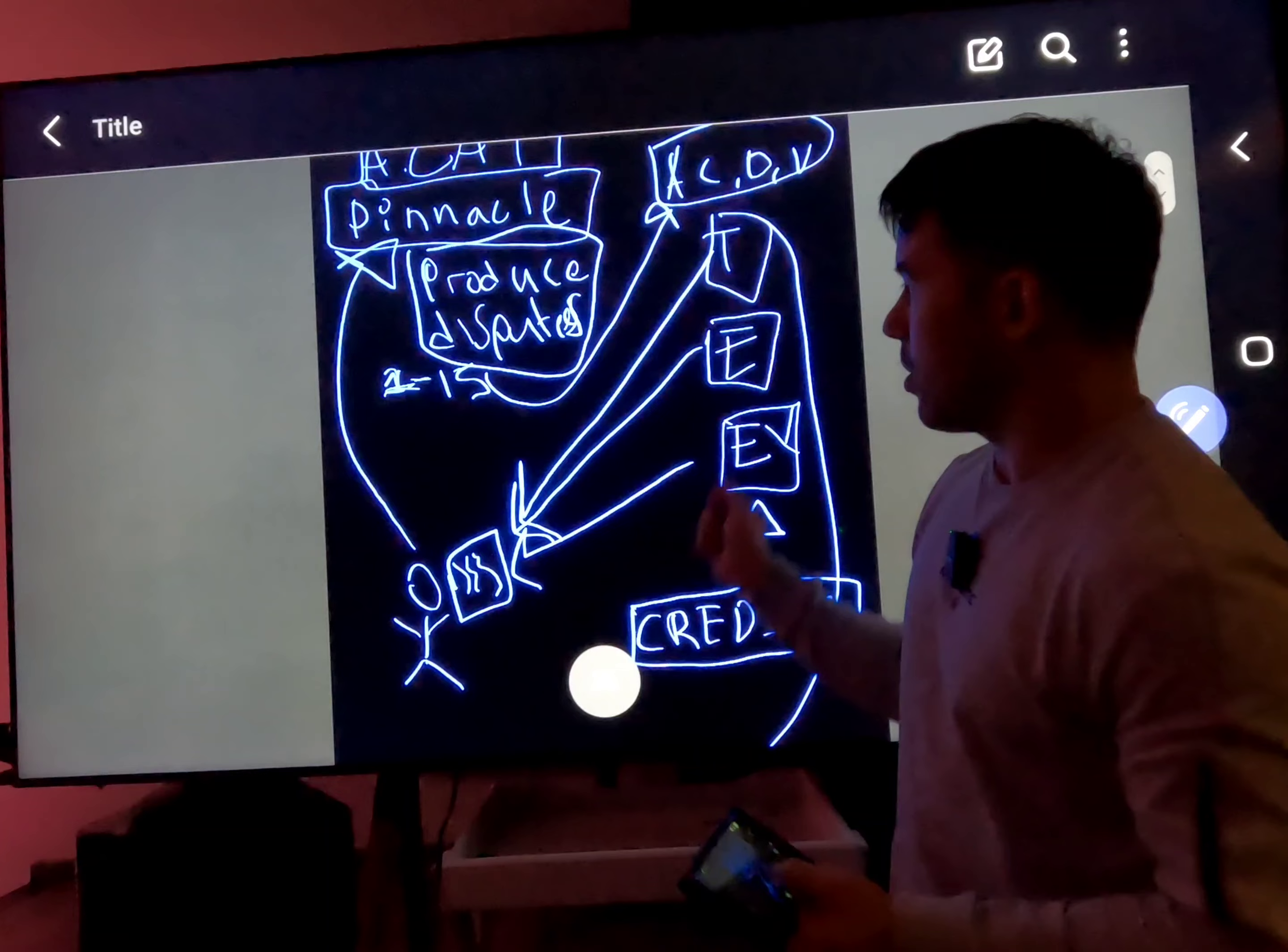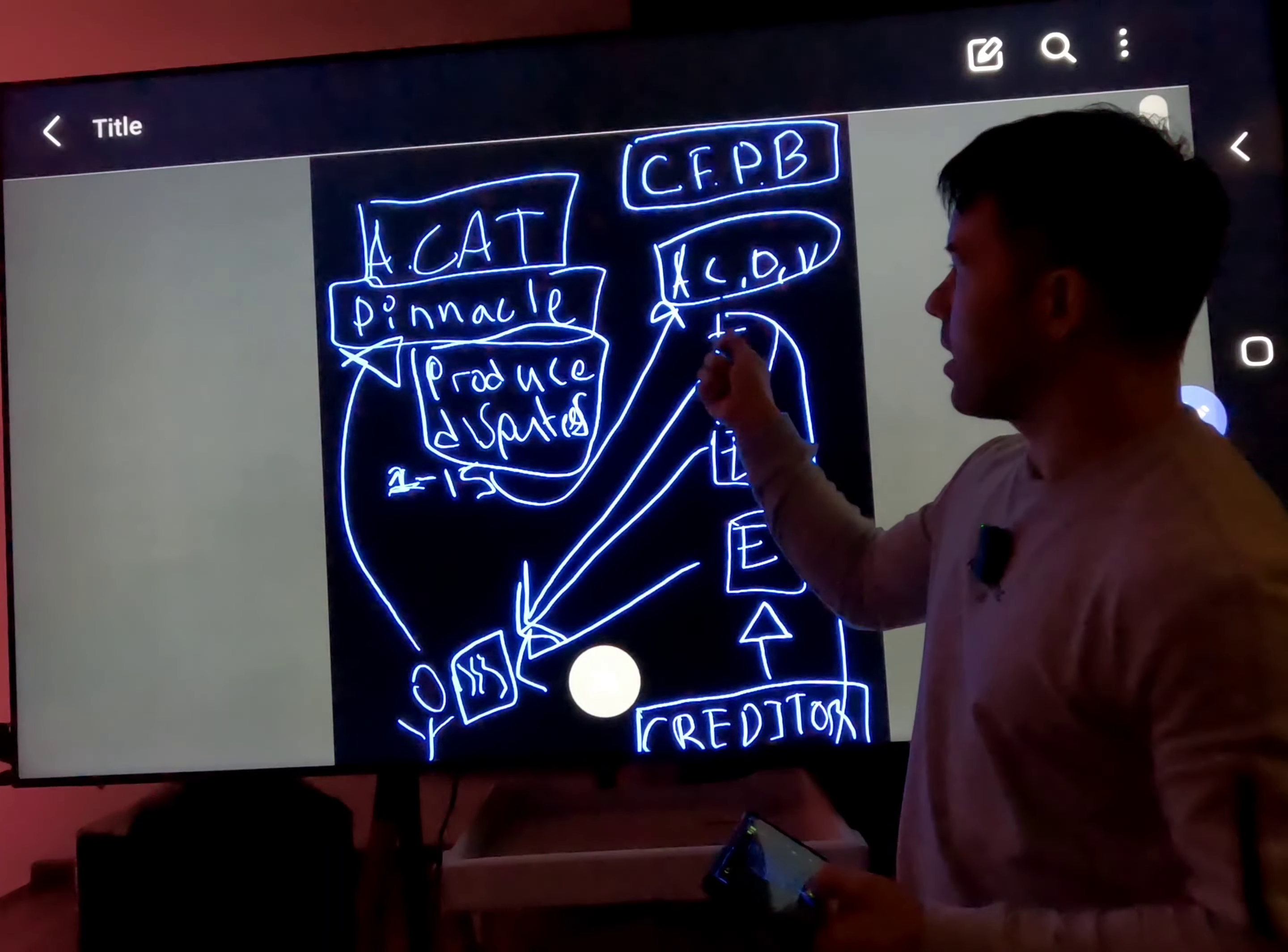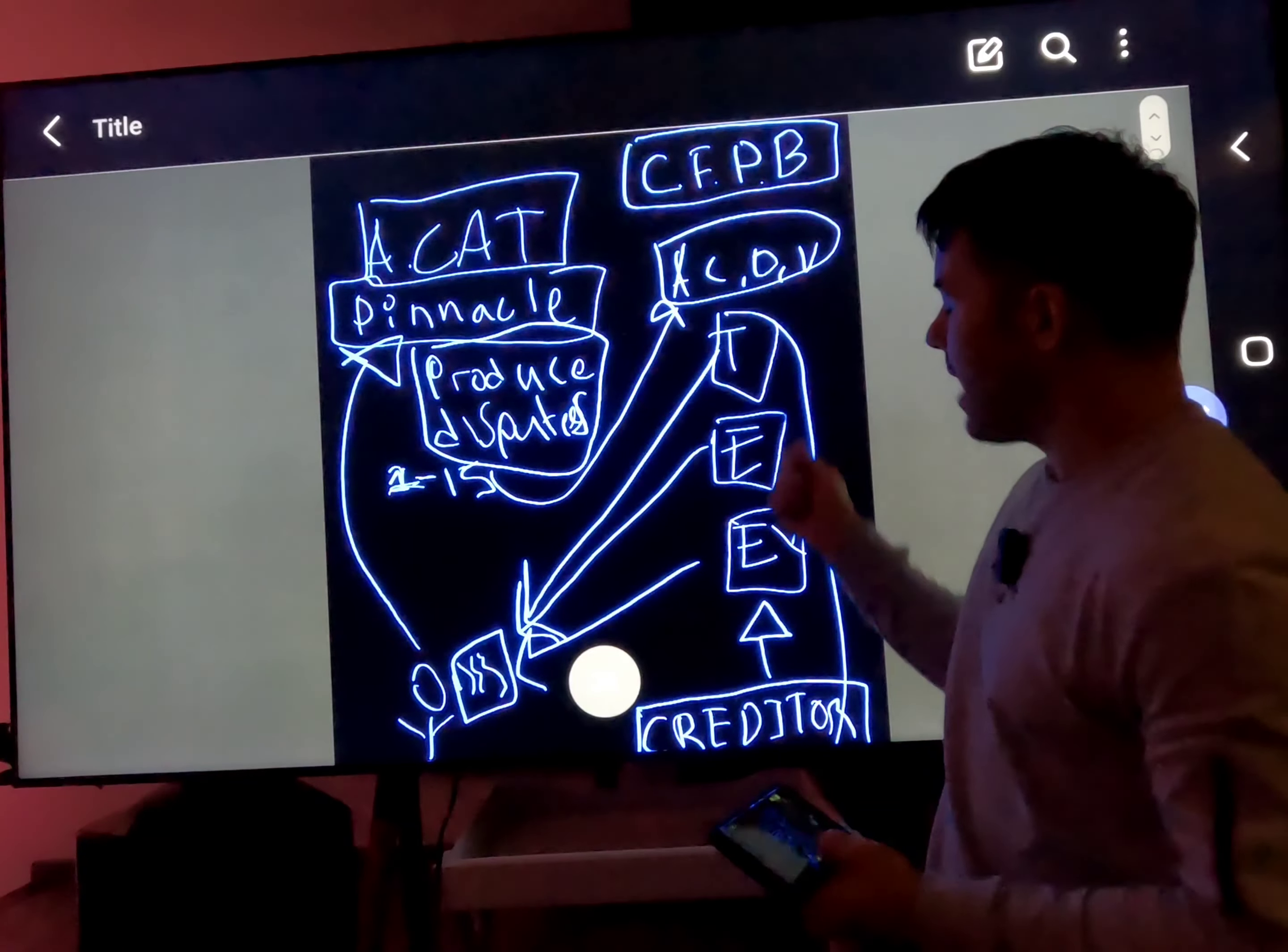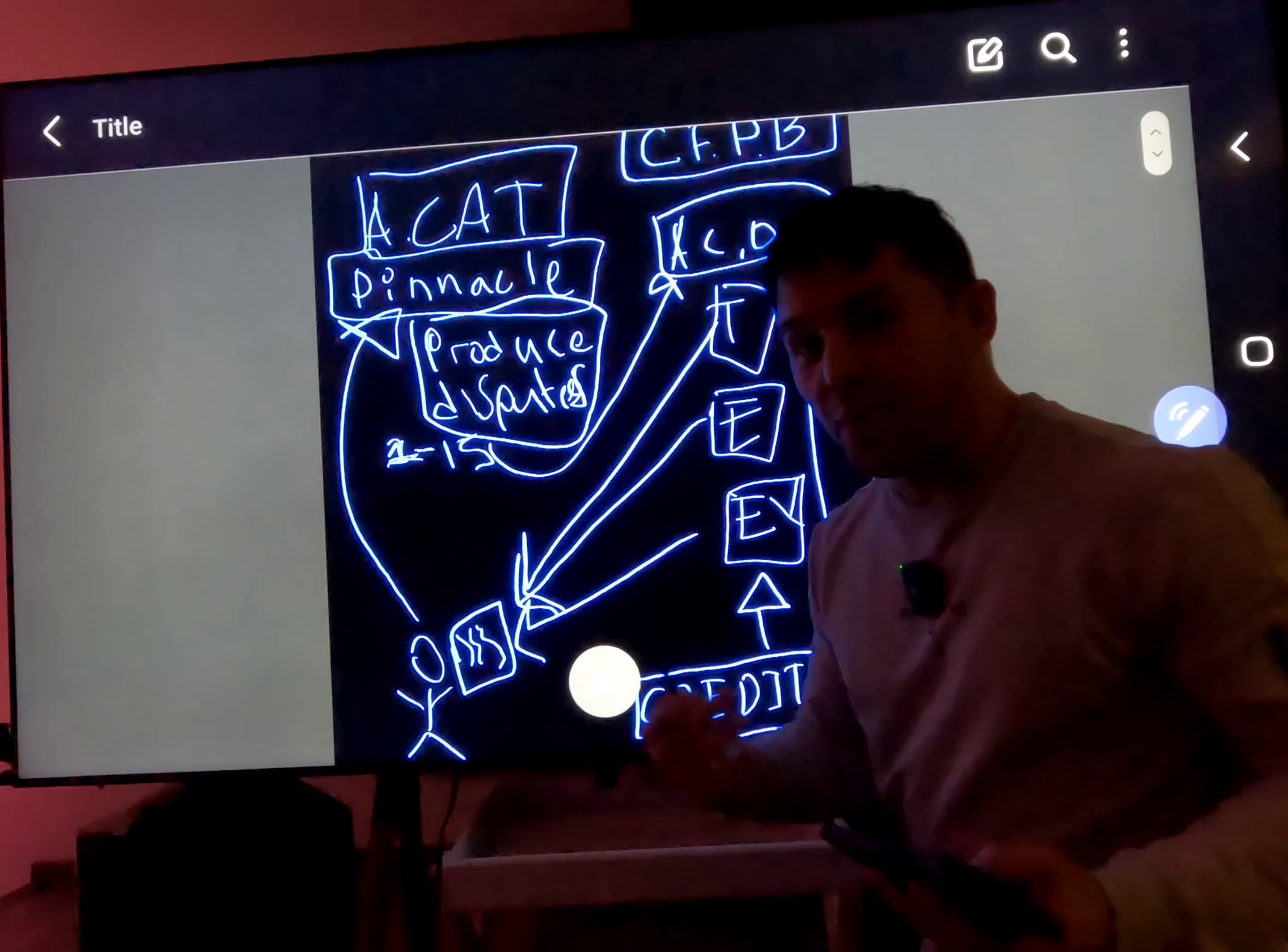Here's the problem. When you dispute that report with the bureaus, they have something called ACDV - Automatic Credit Dispute Verification System. It's a system that they have in-house. You wouldn't know this because you never worked for the bureaus. Pinnacle Credit Repair knows people that work inside.